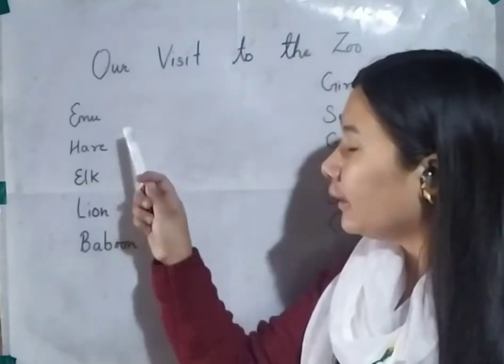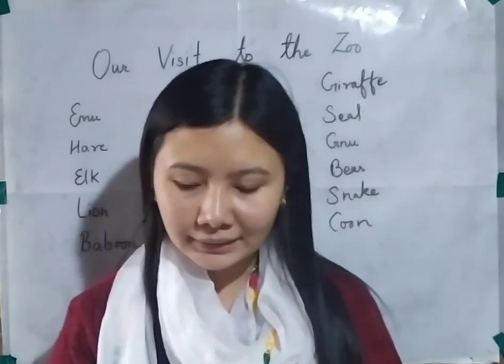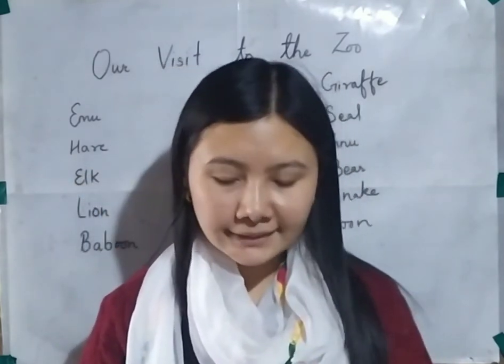In the second stanza, it says: we saw a hare and a bear in his lair and a seal have a meal on a high back chair. They saw a hare — the picture of hare is on the left hand side, the second picture. They also saw a bear in his lair. The picture of bear is on the right hand side, the fourth picture. A lair is a place where wild animals sleep.